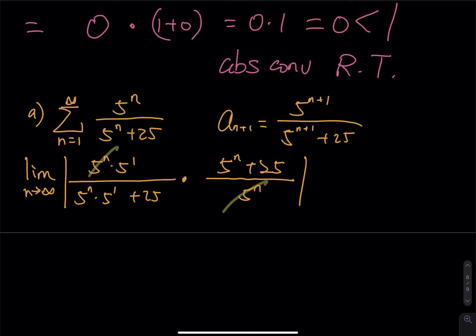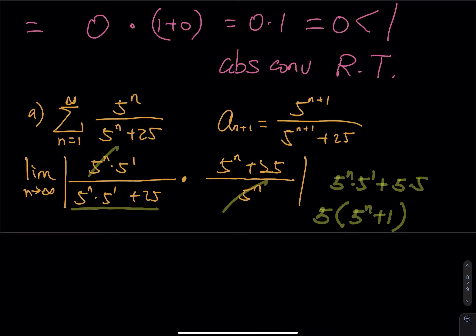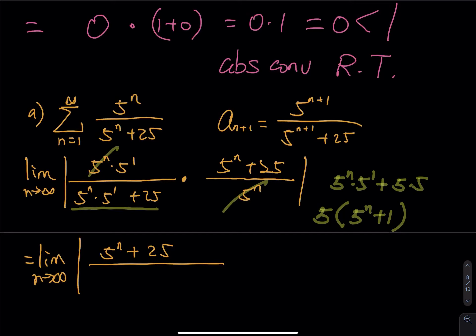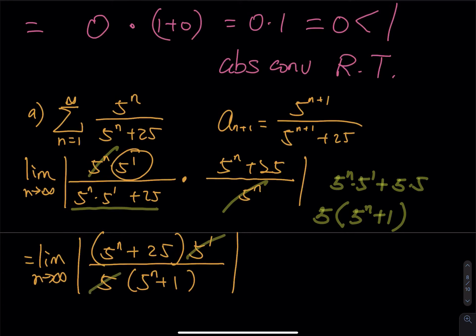First cancel 5^n. Then notice the denominator: 5^n times 5 plus 25 is the same as 5^n times 5 plus 5 times 5, so we factor out a 5. Inside the parenthesis we have 5^n + 1 times 5... actually the denominator simplifies. Back to the limit as n approaches infinity, inside the absolute value we have 5^n + 25 on top and 5 times (5^n + 1) on the bottom after factoring.